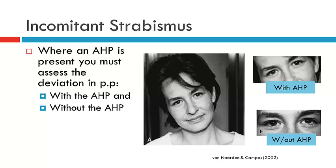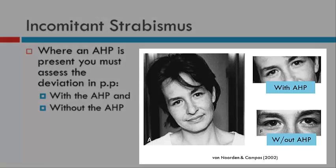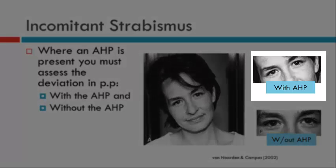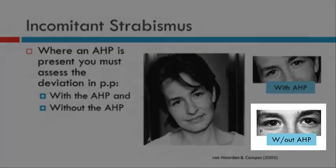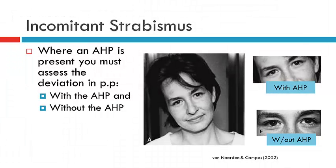Another feature to consider is that the deviation in primary position may change depending on whether an abnormal or compensatory head posture is present. Looking at the patient to the right, the patient is tilting their head to the right. With the abnormal head posture, there is very little deviation, whereas in primary position there is a clearly visible vertical deviation — in this case a left hypertropia. The patient is tilting their head to achieve binocular single vision.